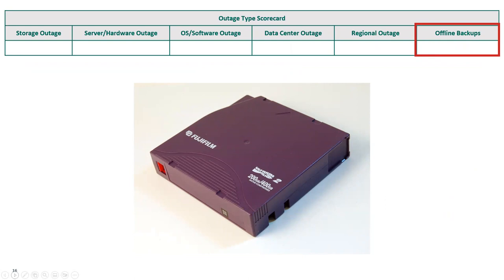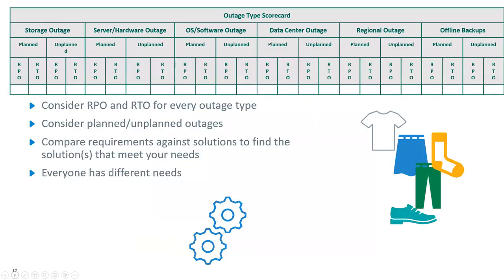The last item is an offline backup outage — if all else fails, you might have to go back to your backups to recover. We want to make sure you're considering planned and unplanned outages because it's inevitable. We'll compare the various requirements against solutions and share the ups and downs of each, because there are benefits and cons to every one. Everybody has different needs — different industries, different regulations. Not one size fits all.